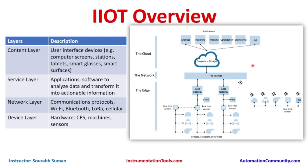The service layer resides either on the edge or on the cloud. It includes applications and software to analyze data and transform it into actionable information. Above that is the content layer at the enterprise level, which includes user interface devices such as computer screens, workstations, tablets, smart glasses, and smart services — everything the user can see.